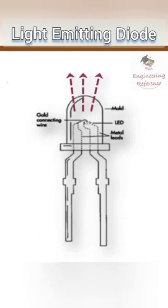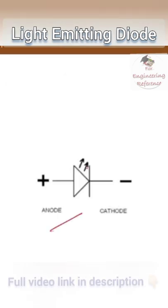So over this junction there will be emission of photon and the symbol of light emitting diode is similar to the PN junction diode symbol. The only difference is the arrow mark. See this arrow mark is the representation of light emission over the junction.